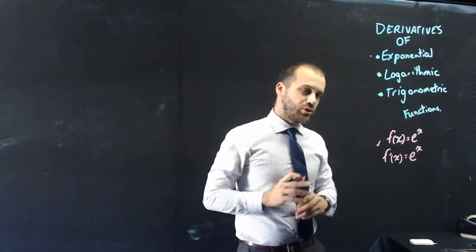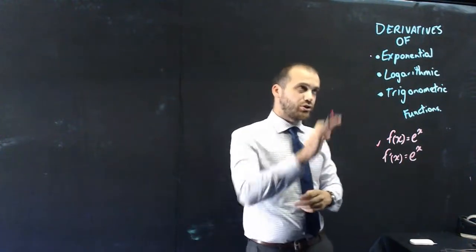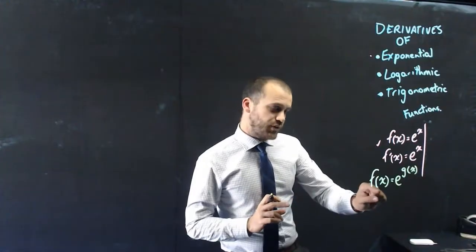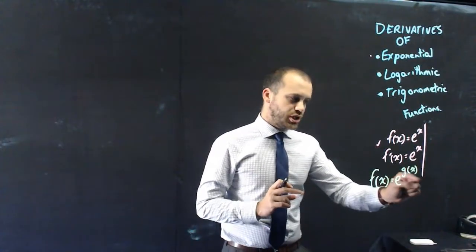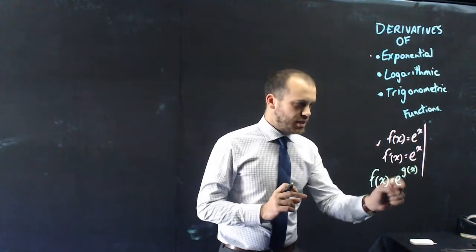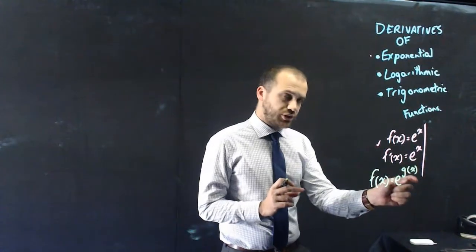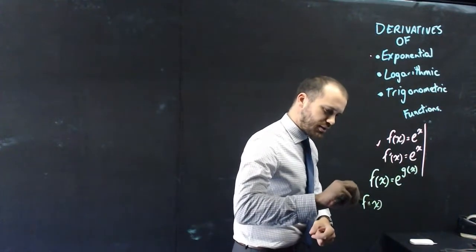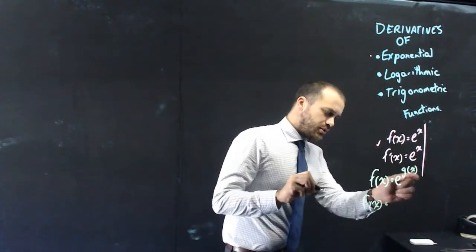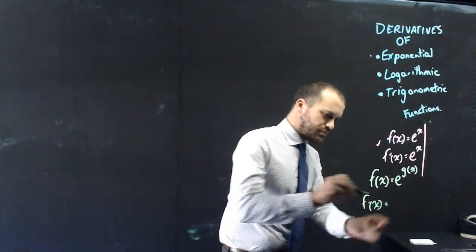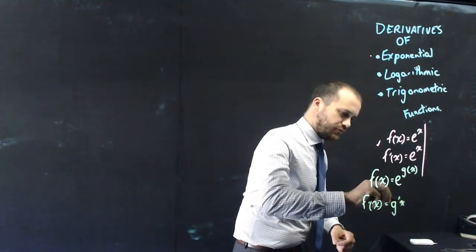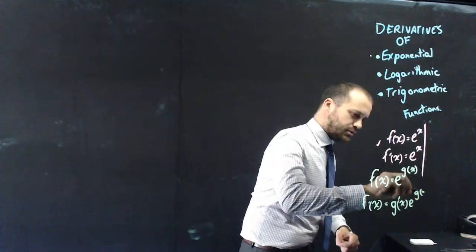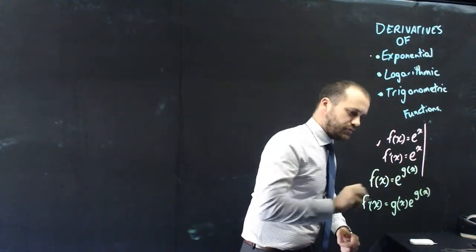We also need to look at a slightly more complicated version of the exponential function. If f of x equals e to the g of x - e to some function - then f dash of x equals g dash of x times e to the g of x. That function comes down and becomes g dash of x.